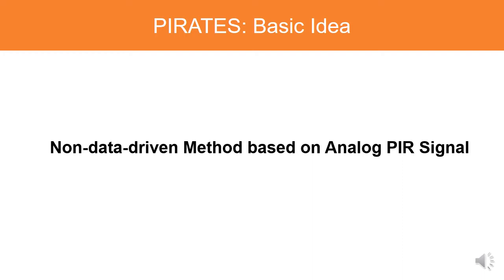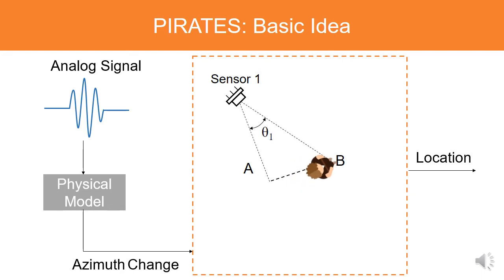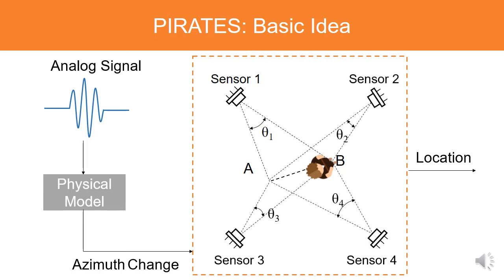To improve the practicability of PIR-based localization, we propose a new method built upon the physical characteristics of PIR sensors that does not require training data. Our method mainly contains two steps. First, it utilizes the analog signal of a PIR sensor to estimate the person's azimuth change based on the physical model of the PIR sensor—the azimuth change is a value closely related to a person's location. Second, after obtaining the person's azimuth changes to several PIR sensors, we build an equation set about azimuth change and location, and solve it to obtain the person's location.